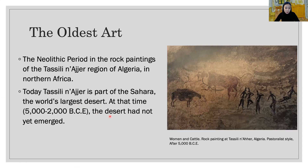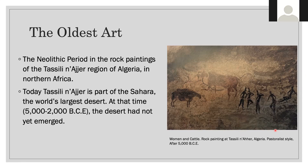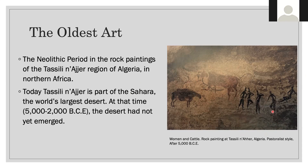This depicts the daily life of the Neolithic period in the rock paintings of the Tassili n'Ajjer region of Algeria in northern Africa. Can you tell me what you can see in this painting? It seems like figures, cows, big mammals, and hunters — yes, very good.